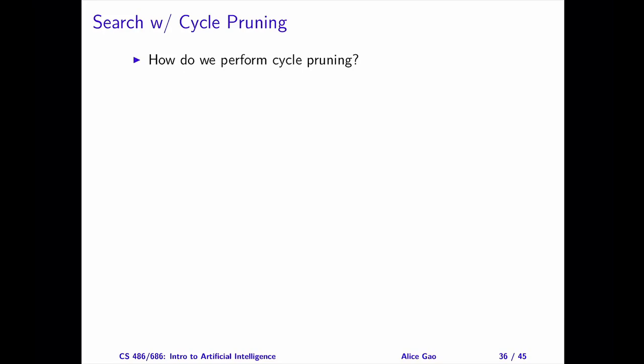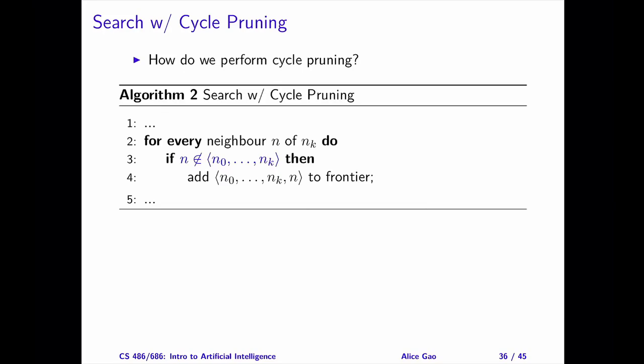How do we perform cycle pruning? Let's take a look at the pseudocode. The important part is highlighted in blue. When we generate the current node's successor, we will check whether the successor is on the current path or not. If the successor is on the current path, it is part of a cycle and we do not add the successor to the frontier.